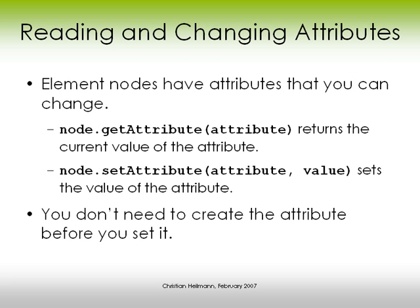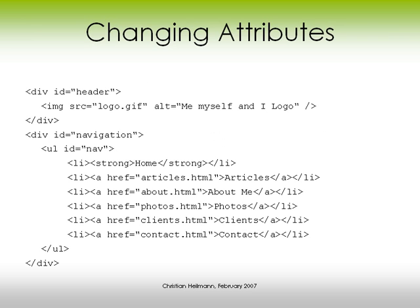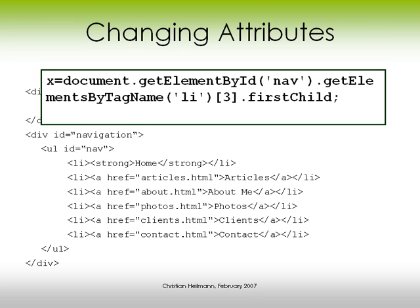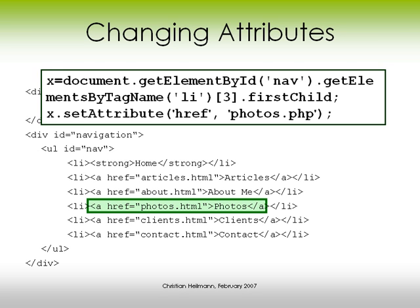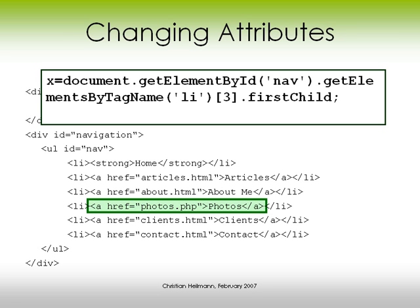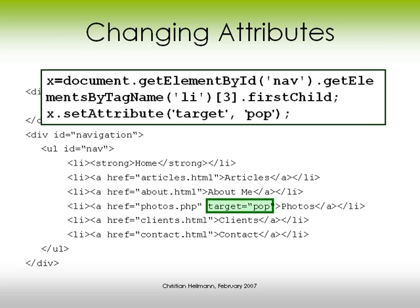Element nodes have attributes and you can change those as well. Use getAttribute to read out an attribute and get its value back, or use setAttribute to actually set the attribute. If the attribute isn't available in the HTML yet, that's fine — setAttribute will generate it for you. In our case, we take the first child of the fourth list item, which is our anchor, and set the href attribute to 'photos' instead of 'photos.html'. We can also create a brand new attribute called 'target' and set that to 'pop', which changes the HTML completely.